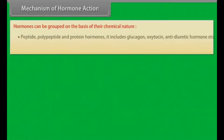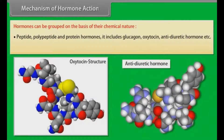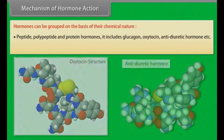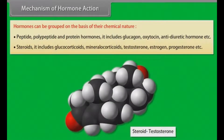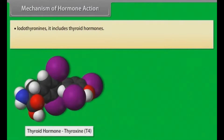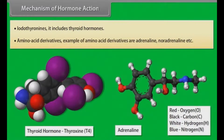Hormones can be grouped on the basis of their chemical nature. Peptide, polypeptide and protein hormones include glucagon, oxytocin, antidiuretic hormone, etc. Steroids include glucocorticoids, mineralocorticoids, testosterone, estrogen, progesterone, etc. Iodothyronines include thyroid hormones. Amino acid derivatives include adrenaline and noradrenaline, etc.